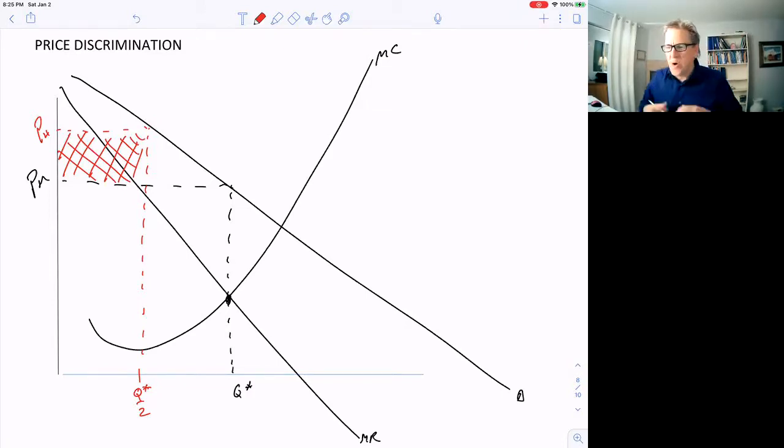Now, the more we can charge different prices to different people, the more consumer surplus that can be captured by the monopolist. We can even get rid of the deadweight loss by capturing that too, by charging a lower price to people that are down in that area.